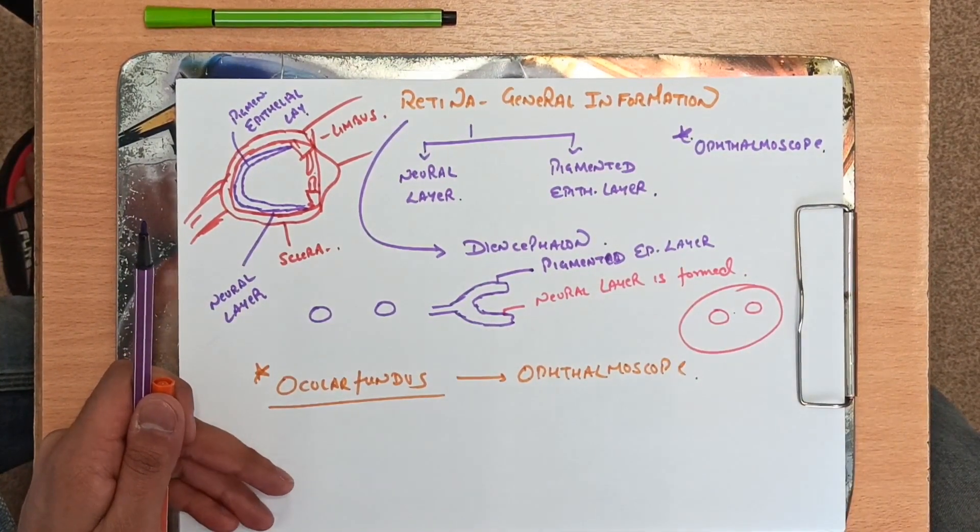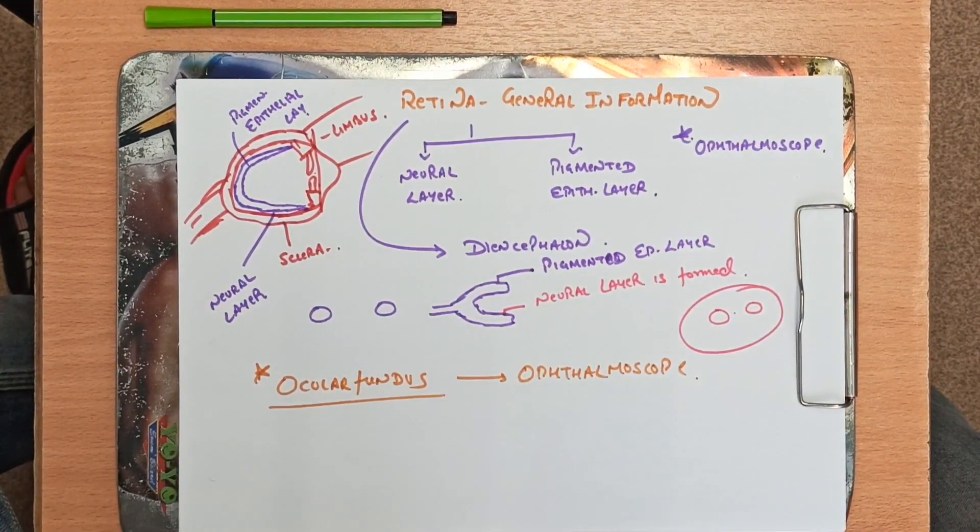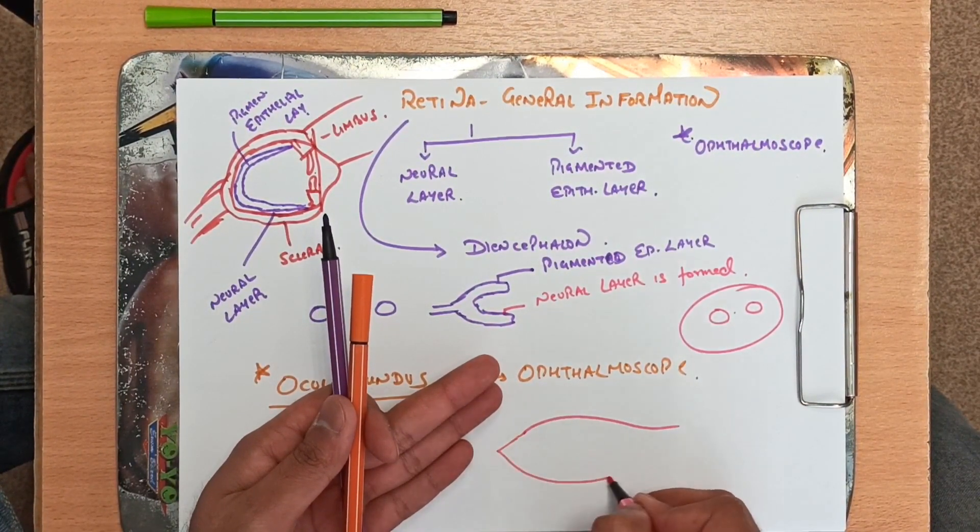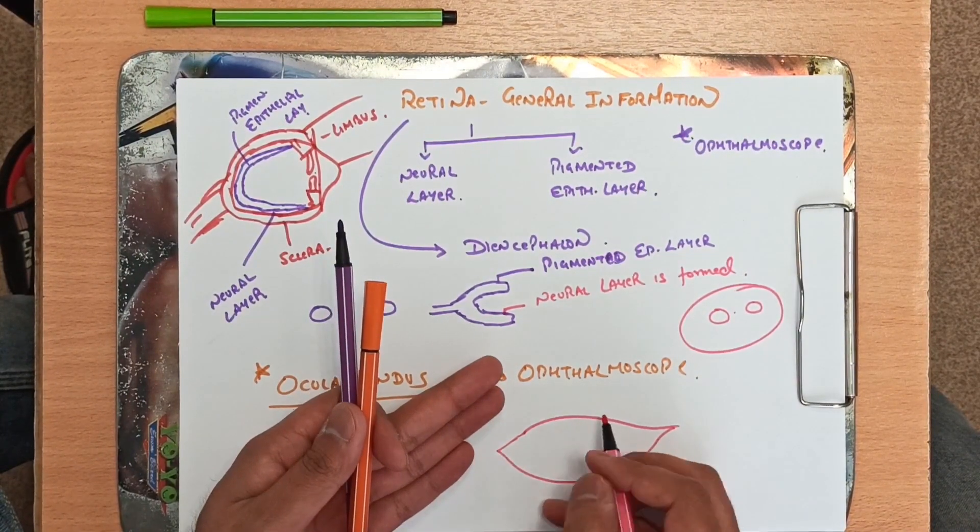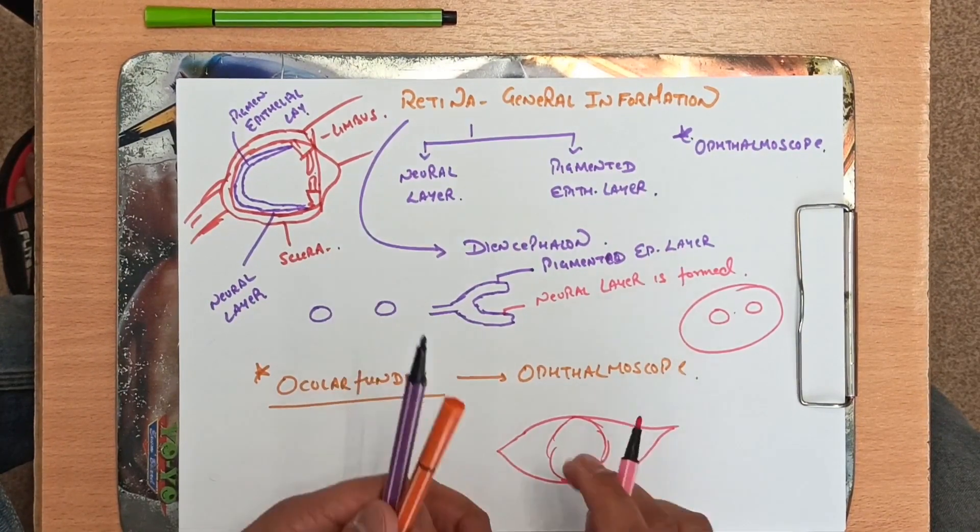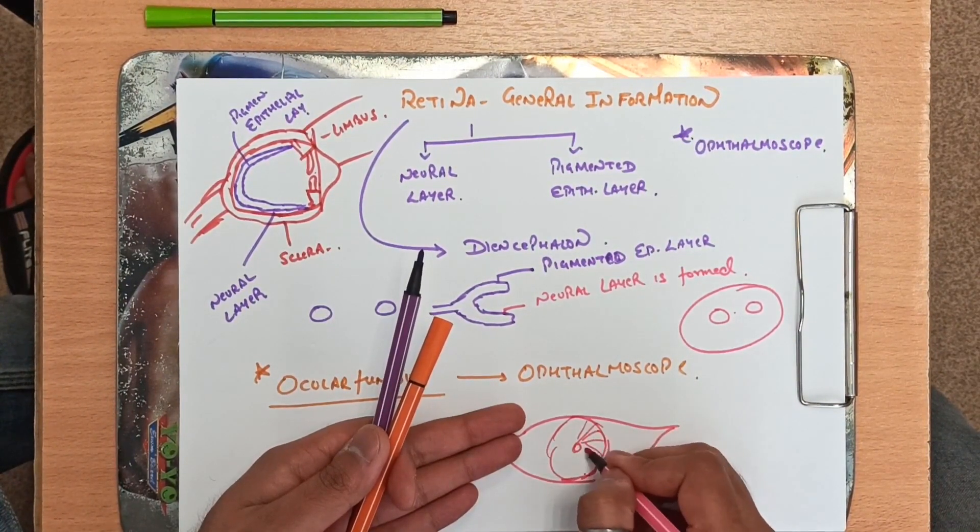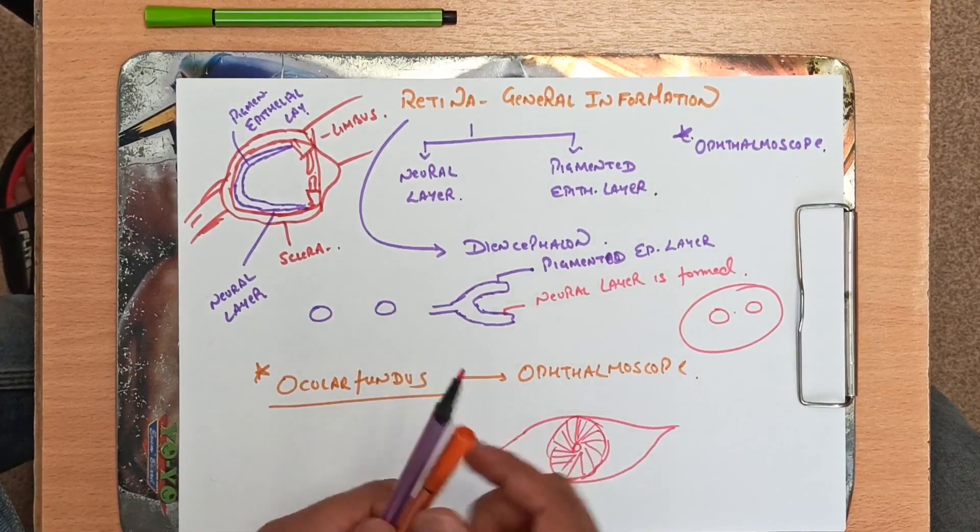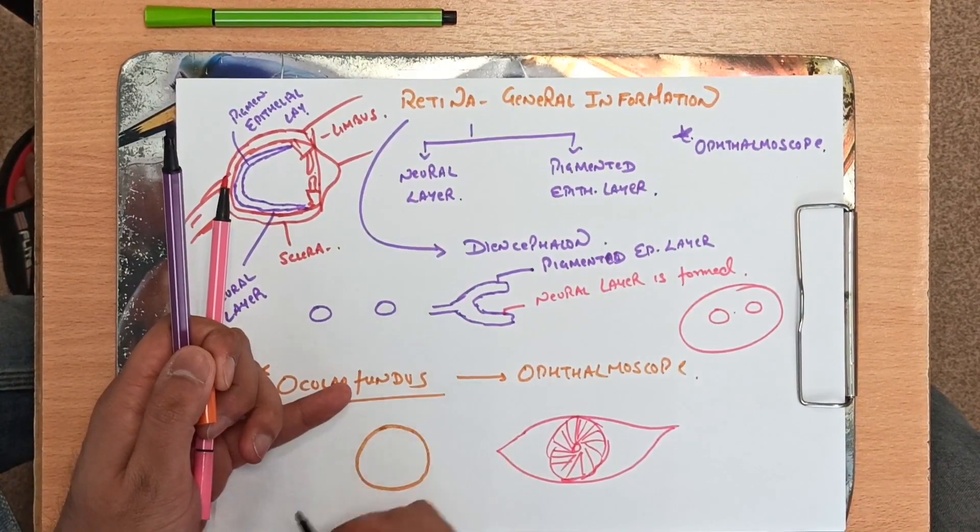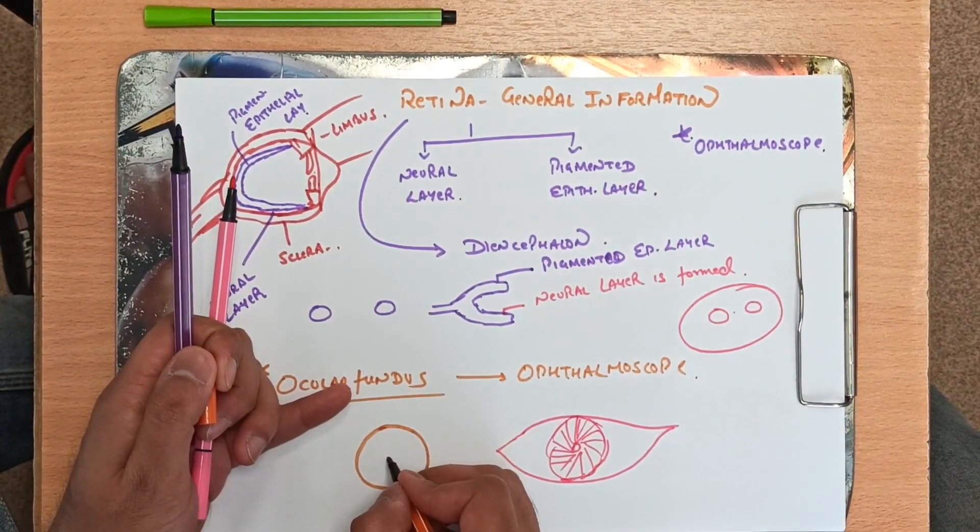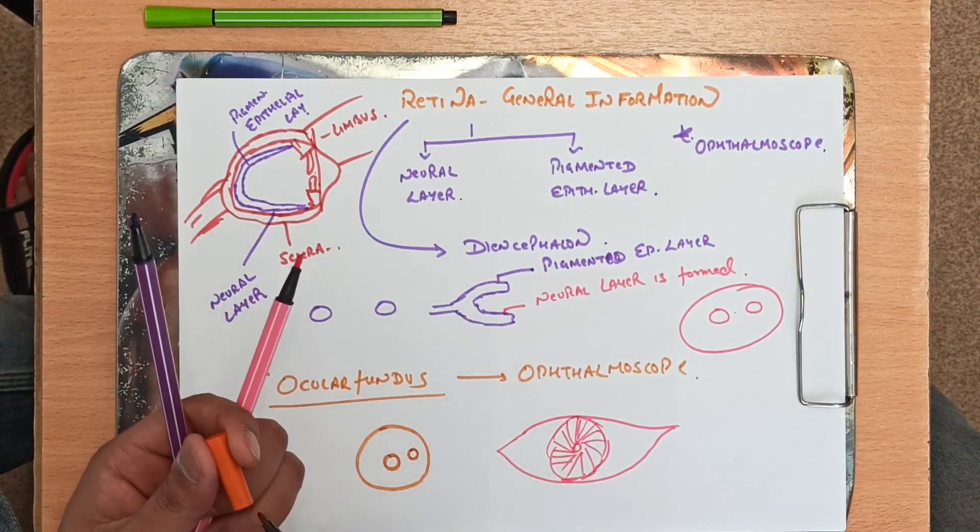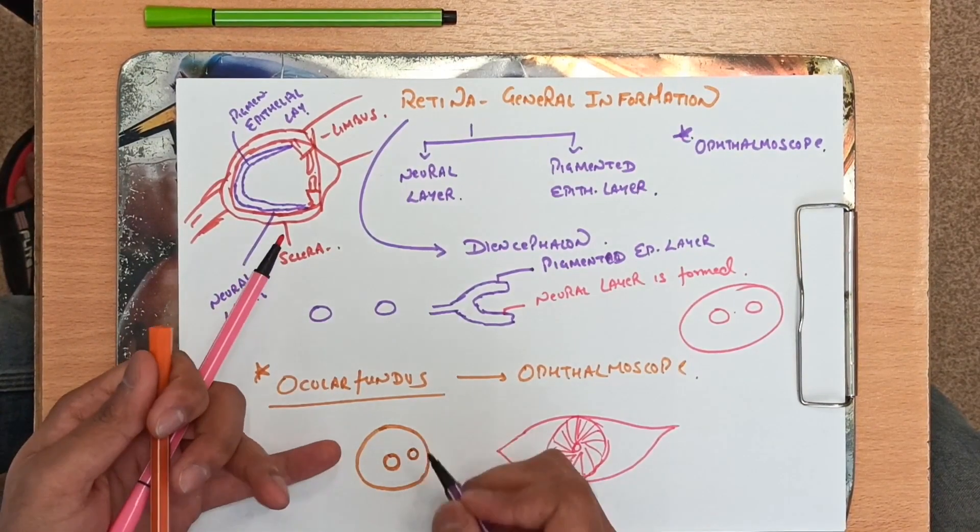This is the view of eye from the front side, just like you are looking into someone's eye. Let me make an eye. This was the eye, this was pupil, this was iris. Now if you see an eye through an ophthalmoscope there are two structures - one is here and one is just medial to it.